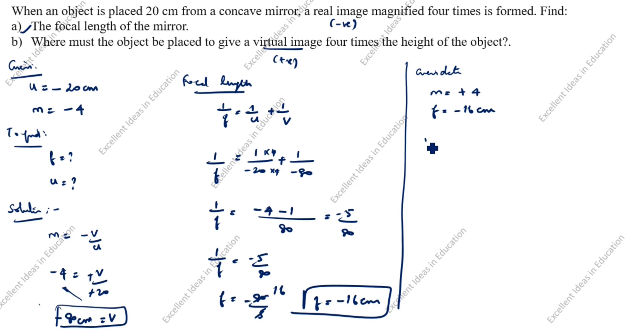Now we will use magnification formula: m is equal to minus v by u. m is 4 equal to minus v divided by u. Minus v is equal to 4u, so v is equal to minus 4u.